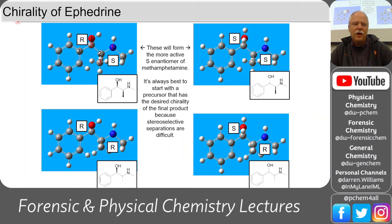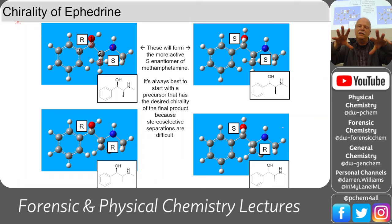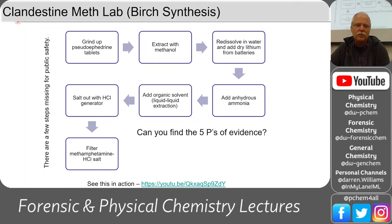You can separate enantiomers into two categories. If a molecule has multiple chiral centers, you have multiple combinations. The ephedrine molecule has an OH group and two chiral centers, giving four possibilities: RS, SS, RR, and SR. You can analyze this molecule and maybe see trends in where it was made.